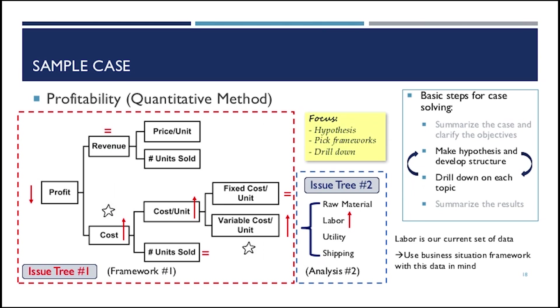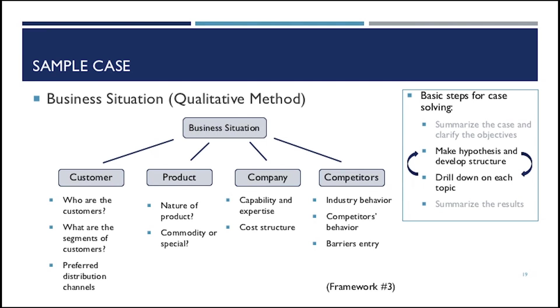So now we know the labor is our current data, and we will move on to a business situation framework to get more knowledge qualitatively. This is the original framework, and we have quite a lot of questions to ask. But we see that our current problem is the labor, and the labor is very unlikely to be related to customers and product, and also some items in the company and competitors. So we trim out them. So we see that there are three major components we would like to focus on: cost structure, industry behavior, and competitors behavior. In this one, we focus on the trimming frameworks.